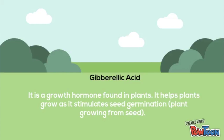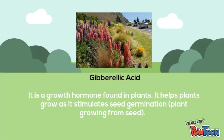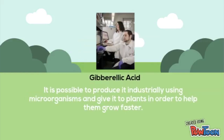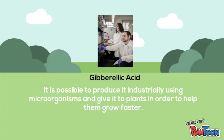So gibberellic acid — what is it? It is a growth hormone found in plants. It helps plants grow as it stimulates seed germination, which is the speed at which the plant grows from a seed. It is possible to produce it industrially using microorganisms and give it to plants in order to help them grow faster.